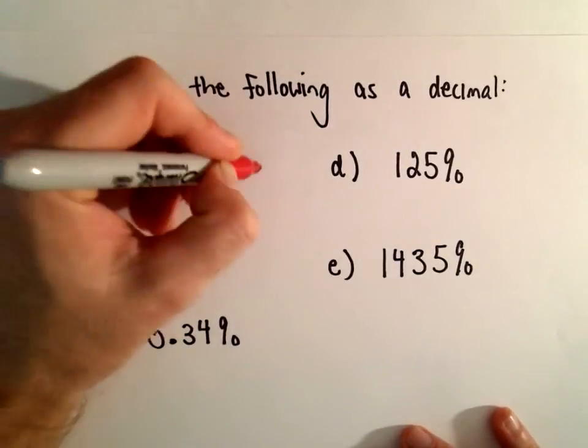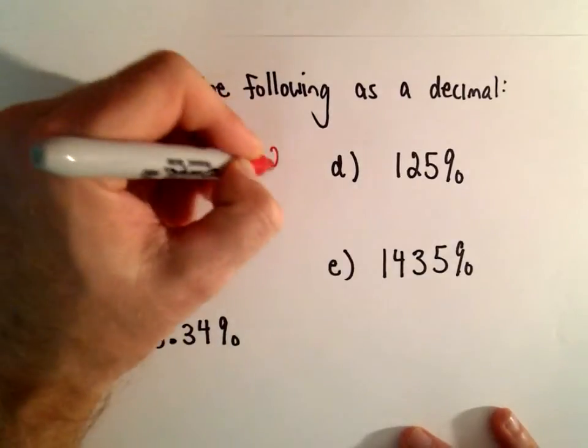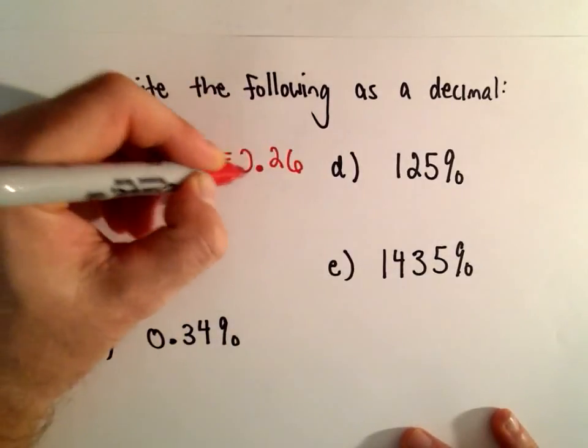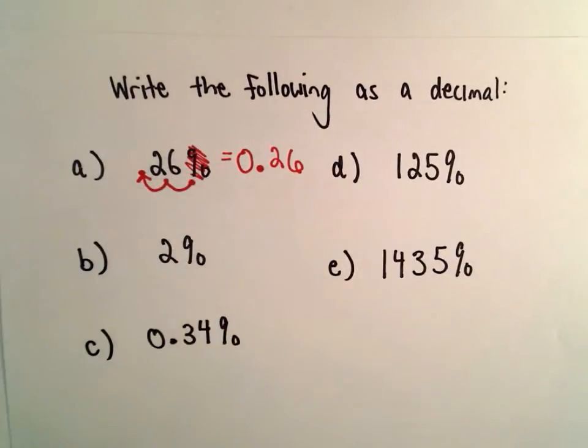So 26%, I'm going to put the decimal place at 0.26, and I'm even just going to put a zero in front. So 26% is 0.26.